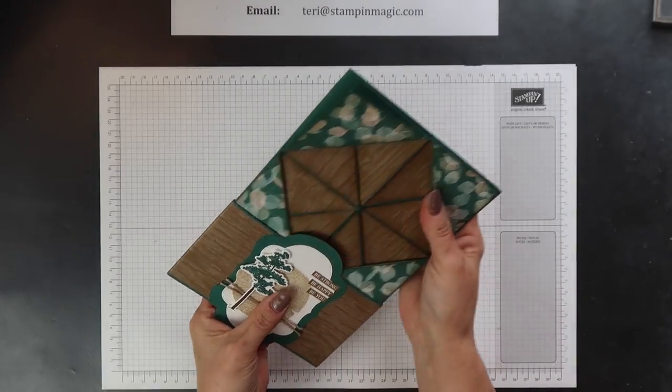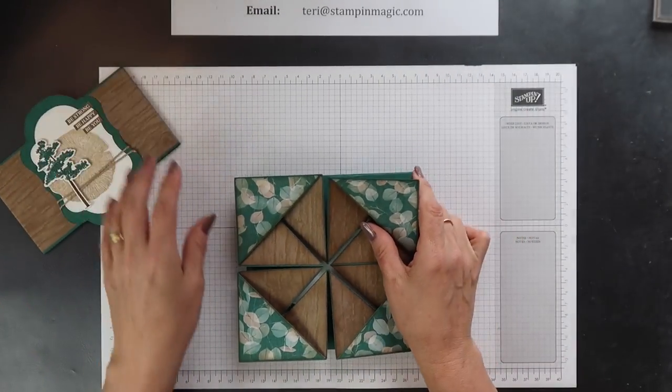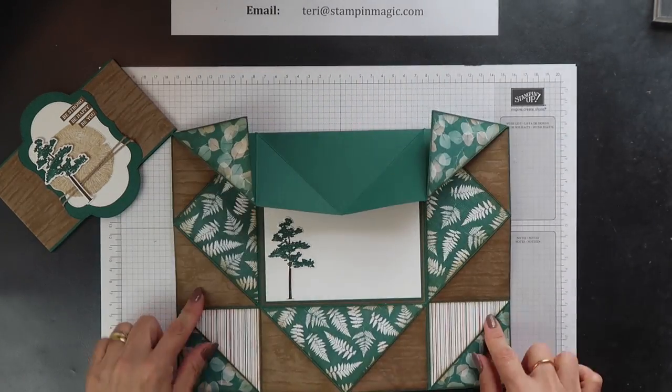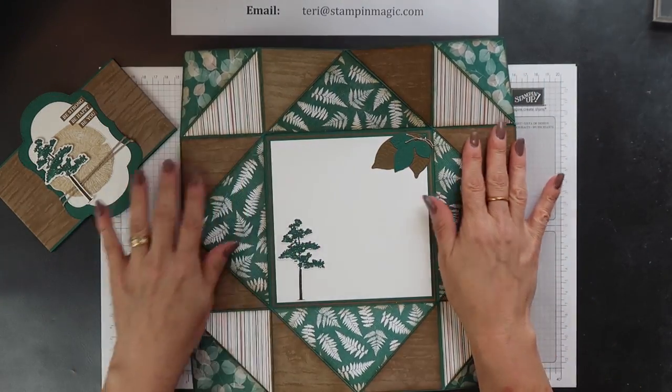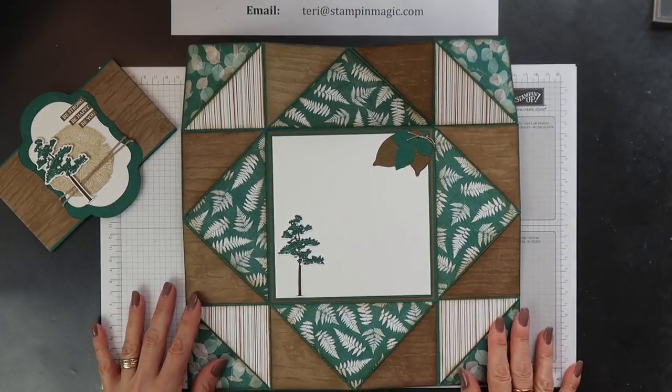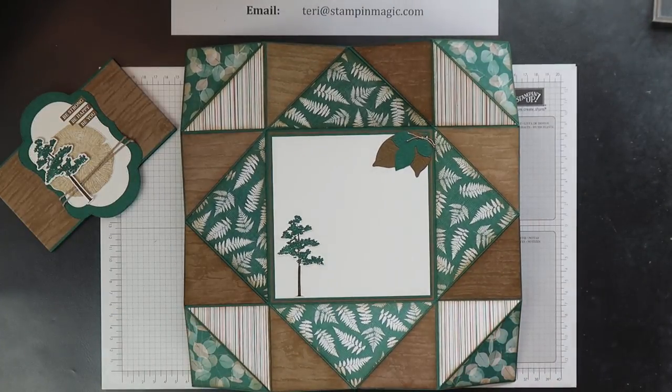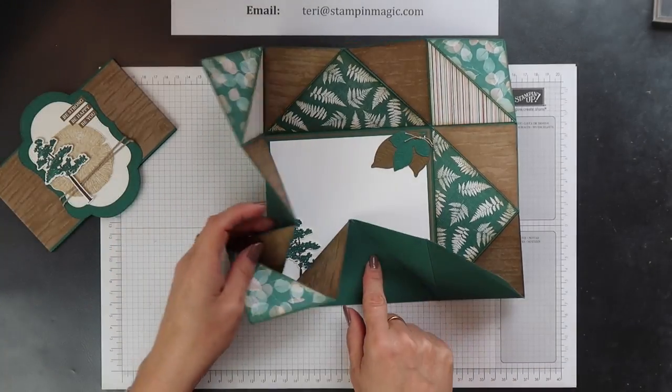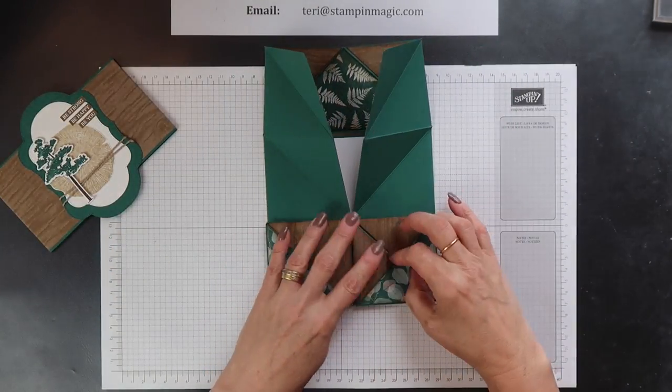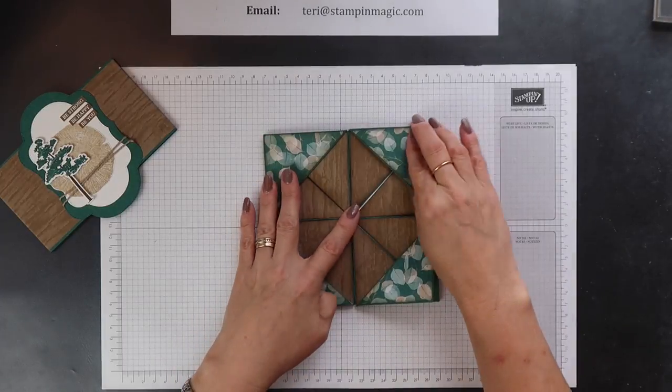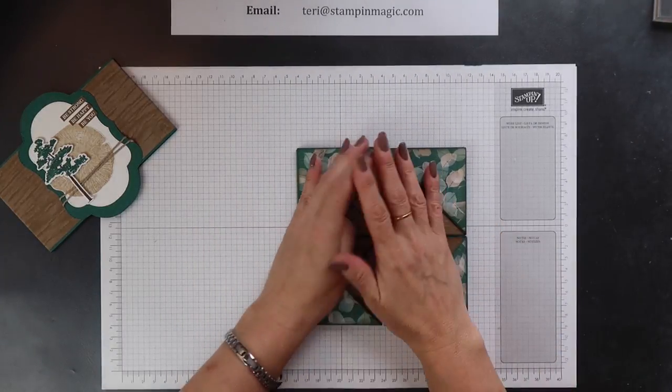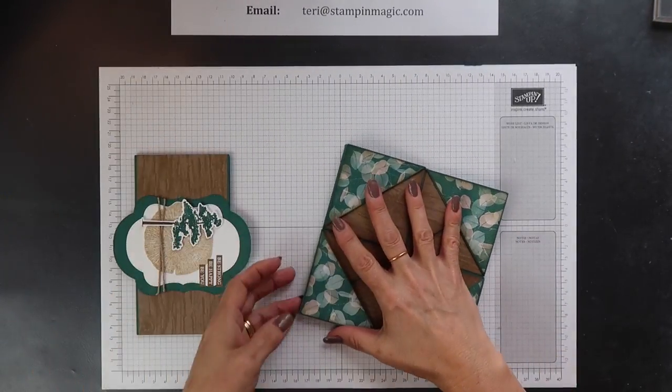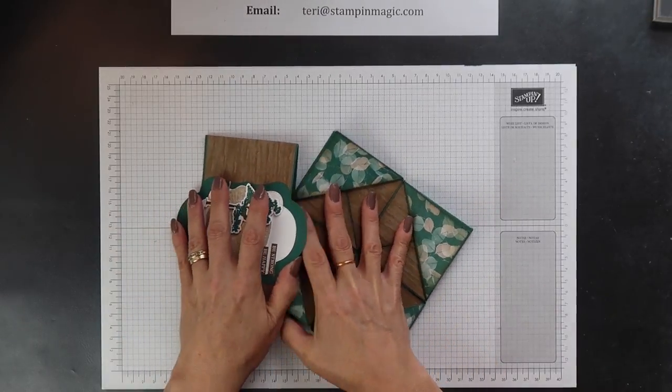Today's project is this beautiful handkerchief fold card, sometimes called a napkin fold card. When this card is closed, it measures six inches square but it opens out into a full 12 inch by 12 inch sheet. I've decorated it with some of our Nature's Poem Designer Series papers and I've also used the Rooted in Nature stamp set.